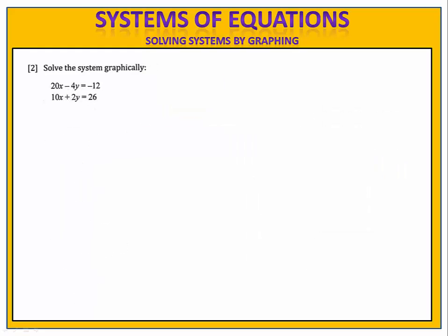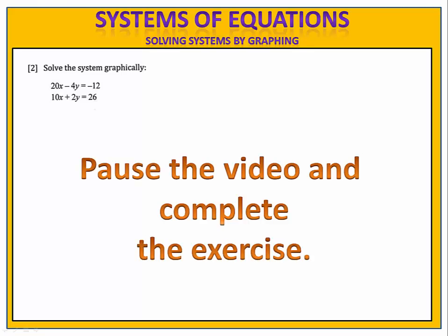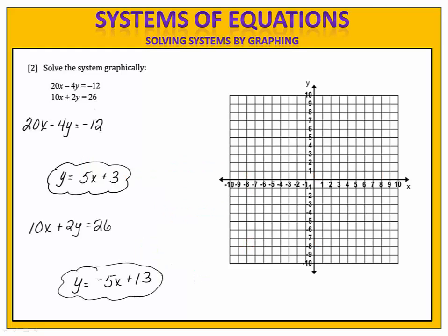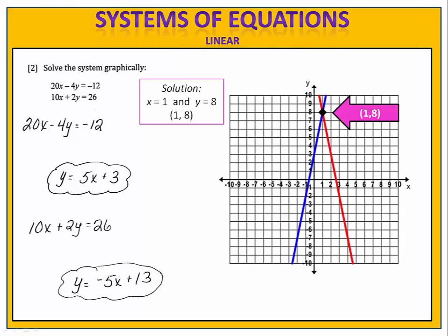In exercise two, we have a system of equations to solve graphically: 20x minus 4y equals negative 12 and 10x plus 2y equals 26. We begin by putting the equations in slope-intercept form: y equals 5x plus 3 and y equals negative 5x plus 13. We then graph both solution sets on the coordinate plane and look for the points that they have in common. In this case, the point in common is (1, 8). x equals 1 and y equals 8 is the solution to the system of equations — the only two numbers that you can substitute into both equations to make them true simultaneously.